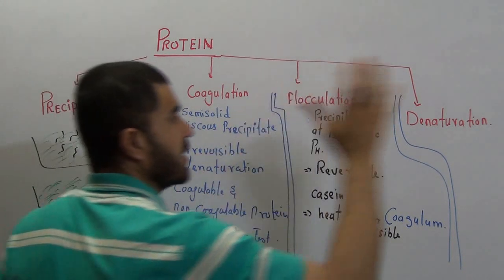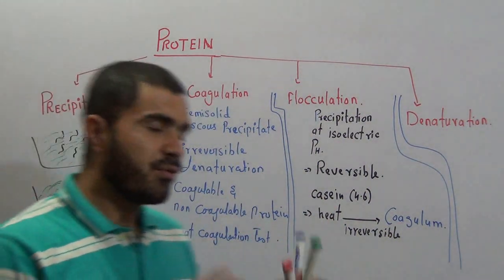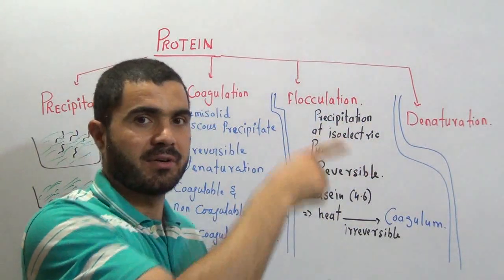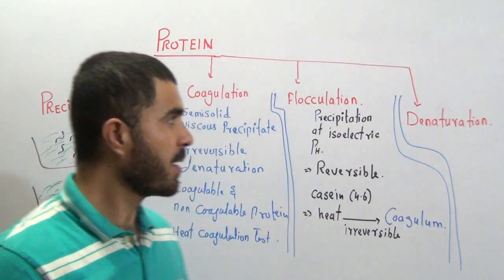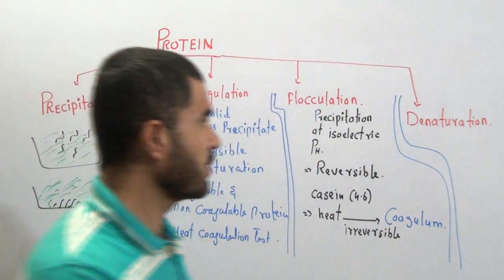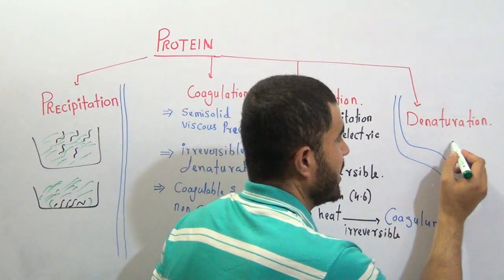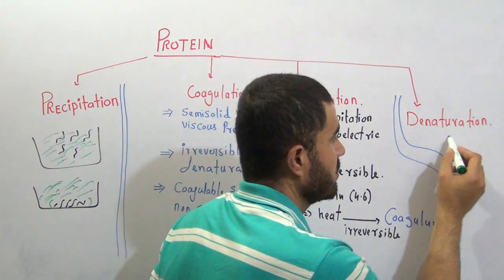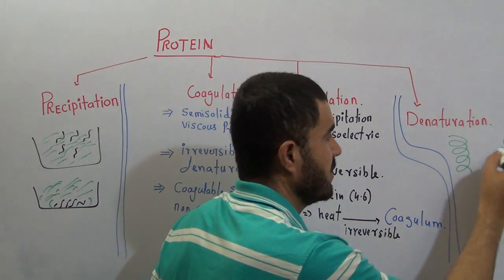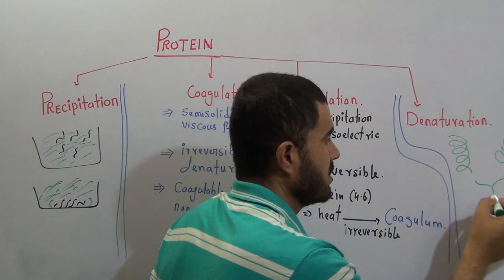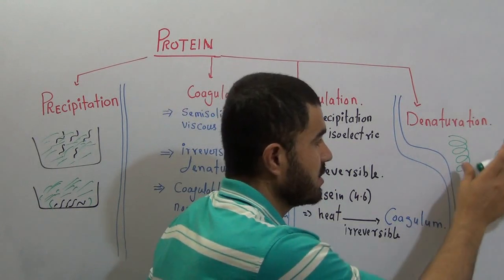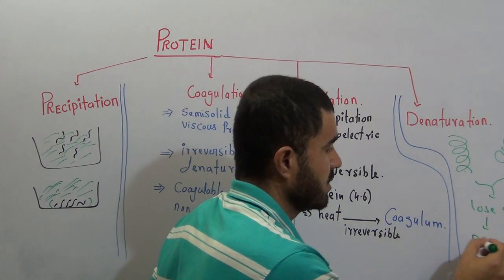Now regarding denaturation — a separate video lecture solely on denaturation has already been uploaded. Denaturation means if a protein has a secondary structure or tertiary structure and it loses that structure — the loss of secondary or tertiary structure — this is called denaturation.